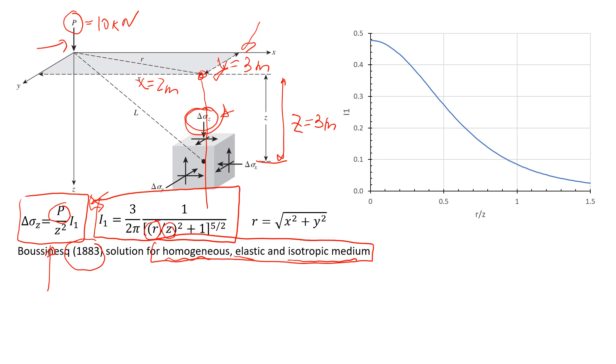So to find this r, we use this formula. And let's do it right now. So we're going to say that r is equal square root of x in the power of 2. So it will be 2 in the power of 2 plus and y, we assume it's three meters. So that will give us approximately 3.61.